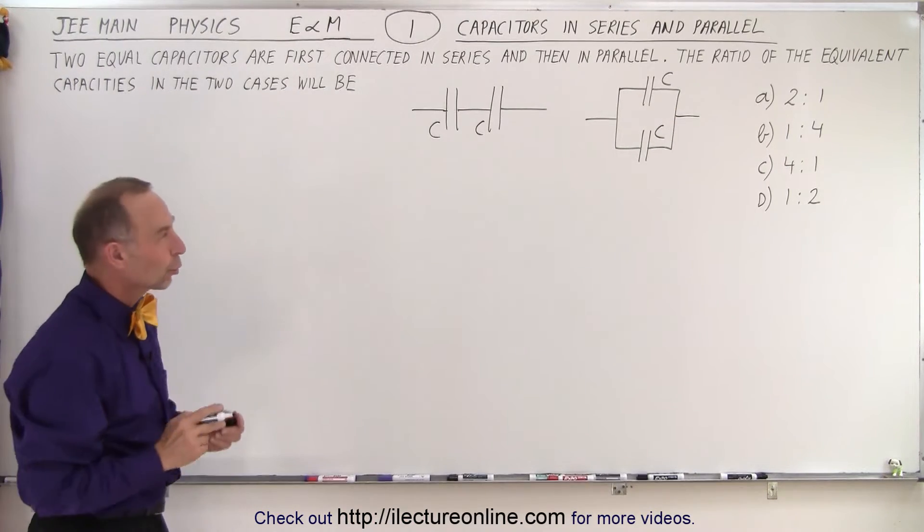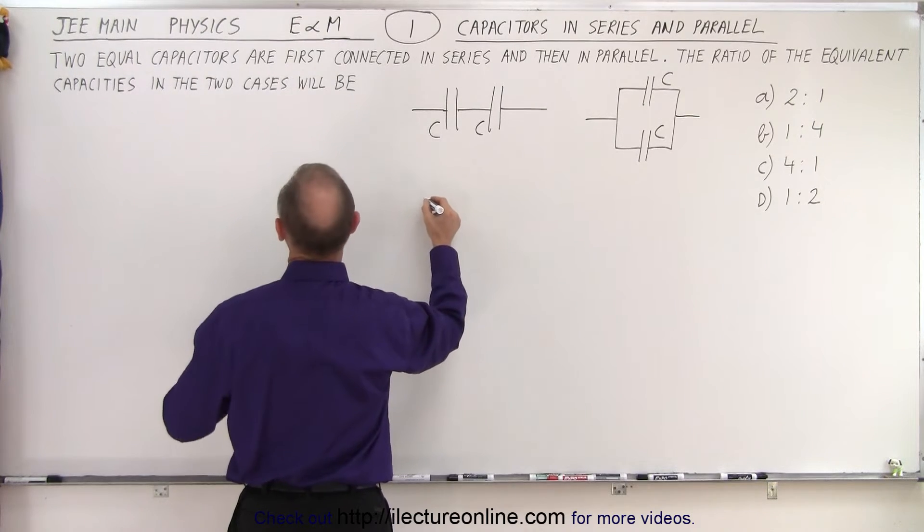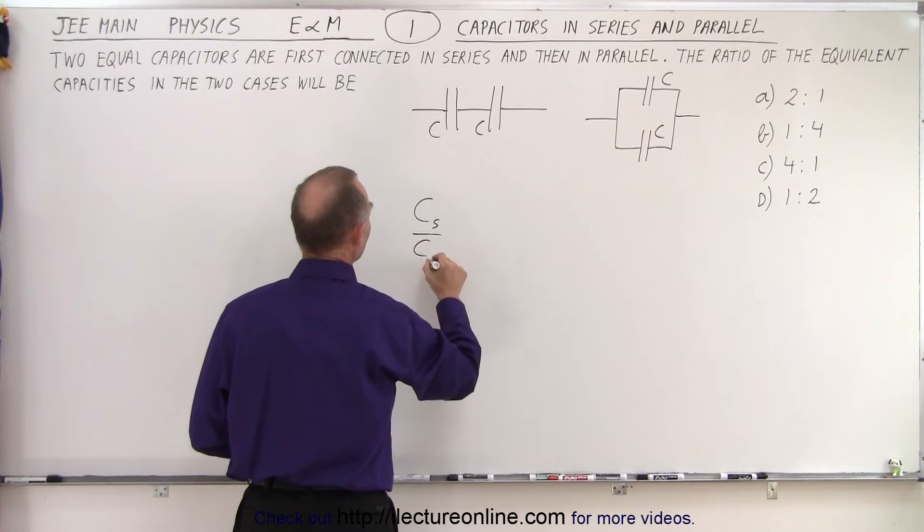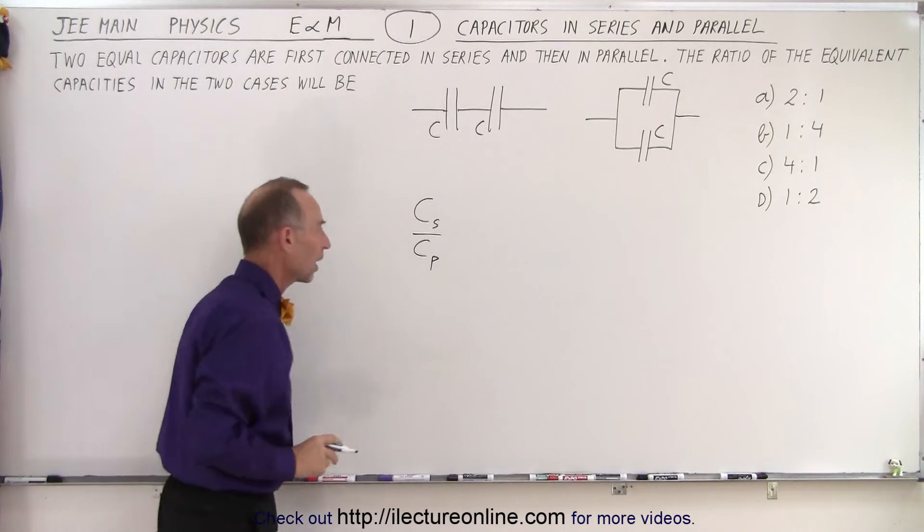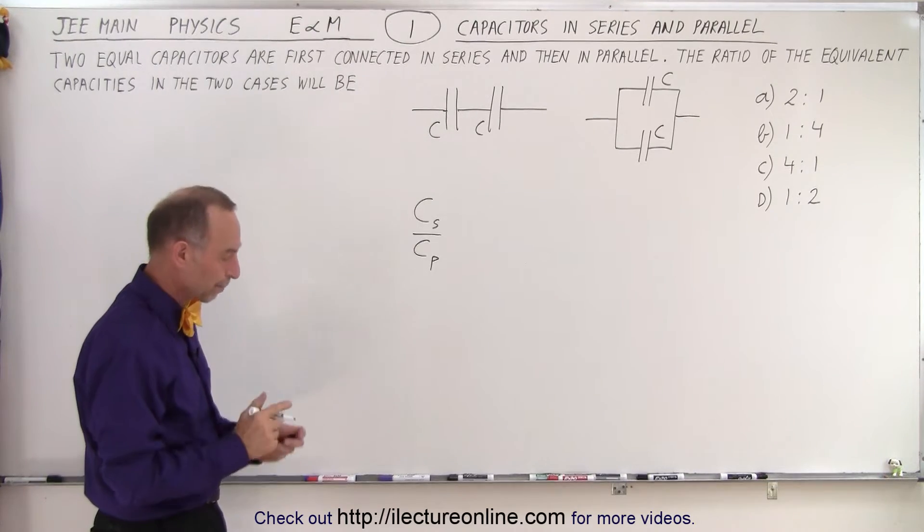Now, how to do it quickly? What we're looking for is we're looking for the capacity in series divided by the capacity in parallel. So how can we come up with the ratio quickly?